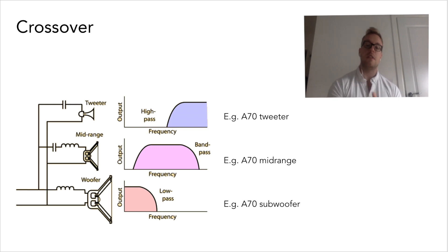So that's why we only want to feed the tweeter with high frequencies. Similarly, we ideally only want to feed mid-ranges with mid-frequencies. You can feed high frequencies to woofers and mid-ranges, but they won't reproduce them very well.